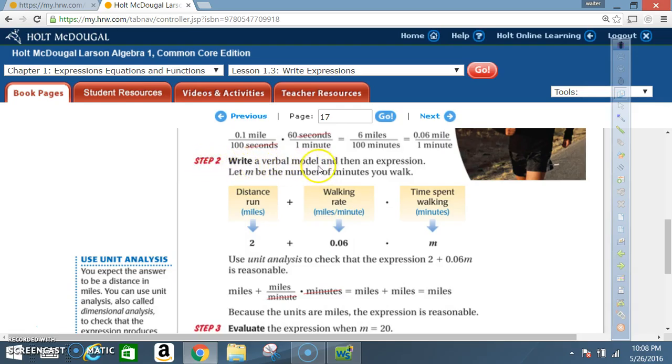Now, step two, write a verbal model and then an expression. Let M be the number of minutes you walk. So, your verbal model is distance run, that's in miles, plus walking rate, that's miles per minute, times time spent walking, that would be in minutes. The distance that you ran was two miles. You determined that your rate was 0.06 and the time you spent walking, we're going to use the variable M.